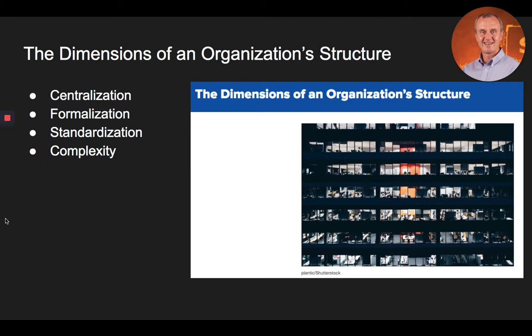The next dimension is formalization, which is the degree to which written rules and procedures are utilized to guide employee actions. A formal organization is one in which written rules are extensive, work goals and job descriptions are clearly specified, and violations of these rules are strictly enforced. The major goal of formalization is to standardize operating procedures to such a point that employee behavior becomes predictable, and these procedures eventually become second nature.